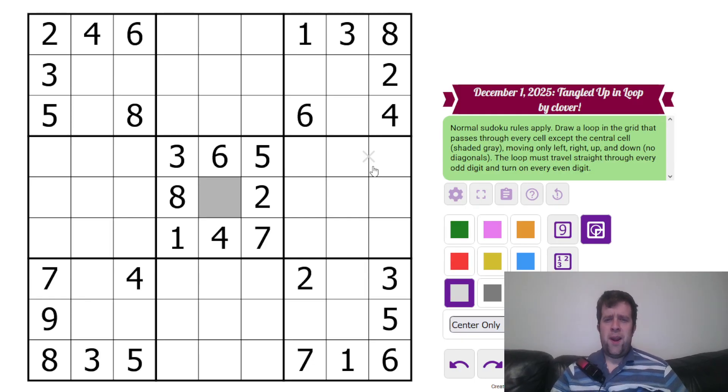The loop must travel straight through every odd digit and turn on every even digit. So let's try. I'm going to give you my best explanation what this looks like. Where would I start? Oh, let's start actually up here. Because this loop's going to go through every cell, it's going to go through this two, like that. So it's going to have to turn on the two, but because it turns on the, it must turn on every even digit. It has to turn like that. Makes sense. And then for this three here, it actually has to go straight. Just like that. So that's it. That's all you need to know to solve today's puzzle.